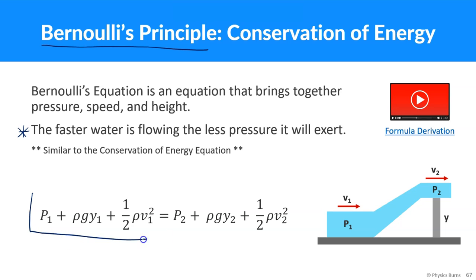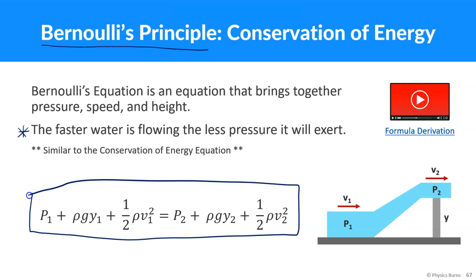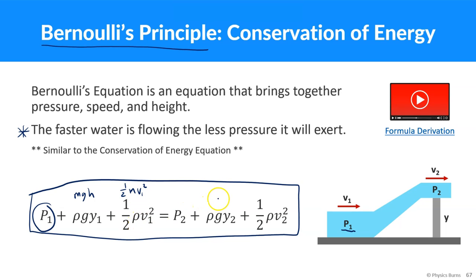Here is the long formula. There's a lot to see, but we have a pressure at one point. This part — we could think of it almost like MGH — is the density of the fluid times gravity times how high above or below it is. And then we have one-half density times velocity squared. You could think of this as one-half MV squared, but instead of M we have the density of the fluid. So it kind of looks like the conservation of energy equation. I would recommend watching the related video to see where this formula comes from.